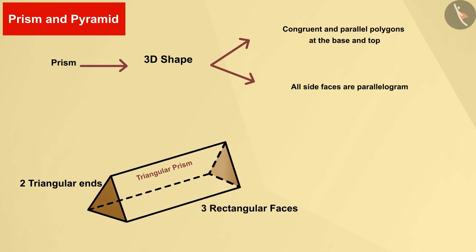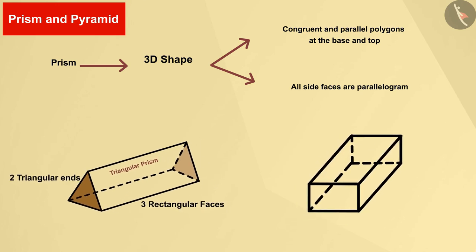Side faces in this figure are parallelograms. That's why it is a triangular prism. Here is another three-dimensional shape. We can see that its base and upper ends are both rectangles which are parallel to each other, and all its side faces are rectangles. This is called a rectangular prism. We also know it by the name of cuboid.